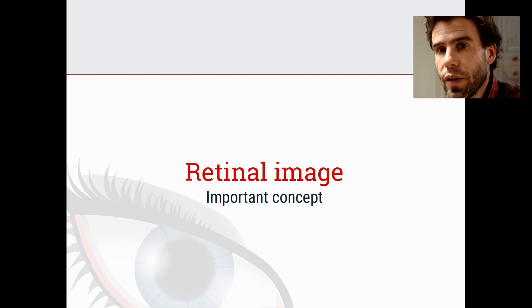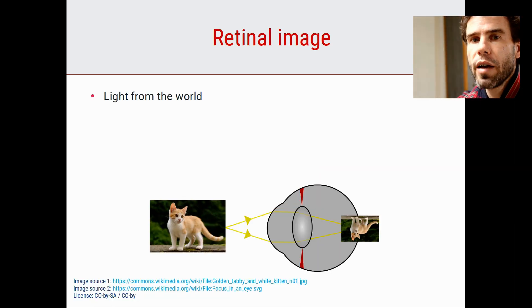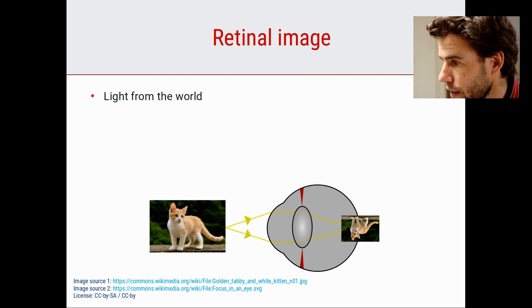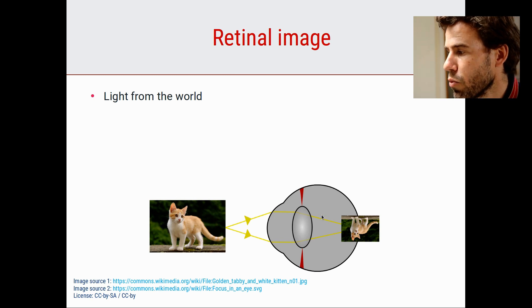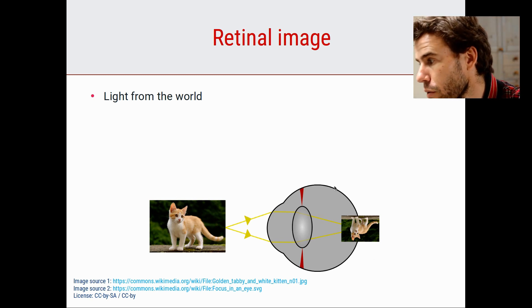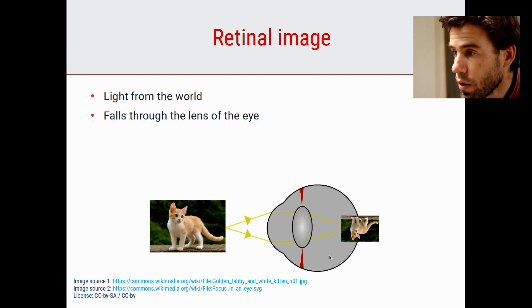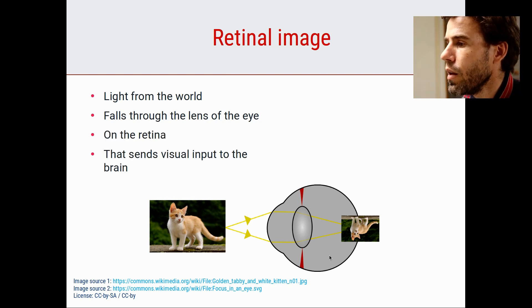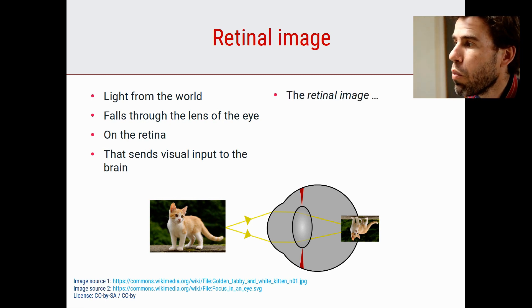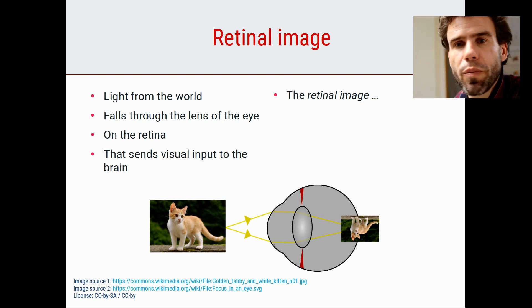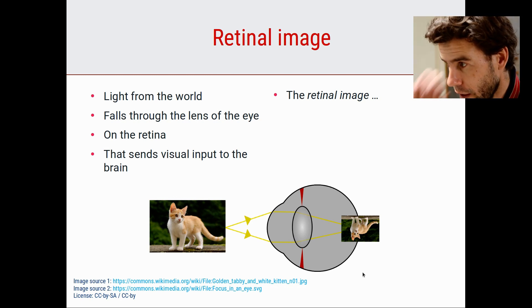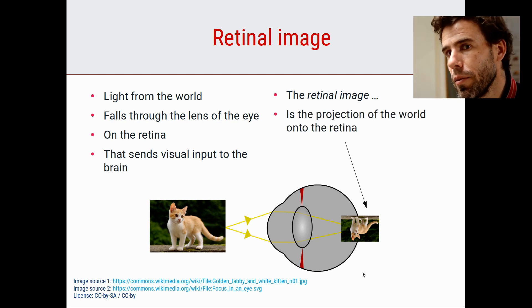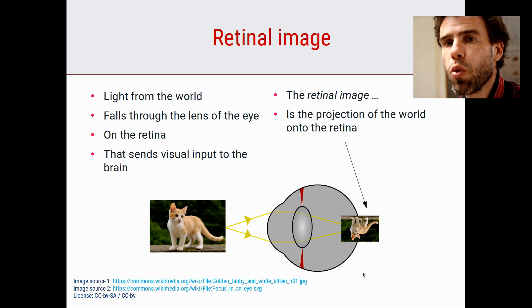Another important concept is the retinal image. When you look at something, light from the object falls through the lens of your eye onto the retina at the back of the eye - that projection of light onto the retina is the retinal image. The retina sends visual input to the brain. Understanding the retinal image is important for understanding why we move our eyes.